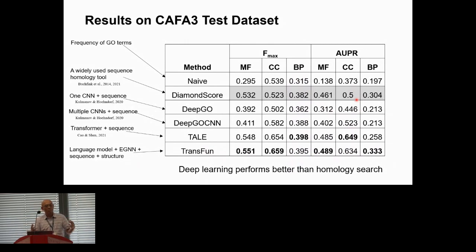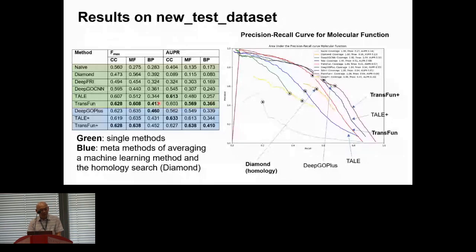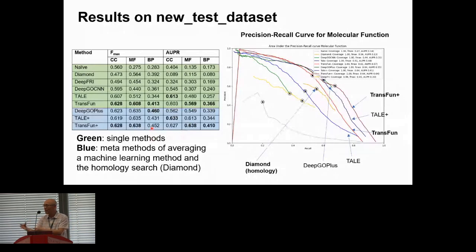On the new test dataset, TransFun still performs best among single-method approaches in most situations. We also evaluated meta methods that combine homology-based DIAMOND score with each machine learning method by averaging output probabilities. TransFun+ — the combination of our method with DIAMOND score — performs best among meta methods. Combined homology and machine learning works slightly better than machine learning alone, and among all meta methods our approach still leads in most situations.